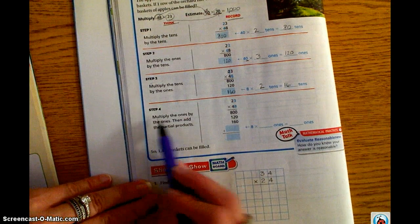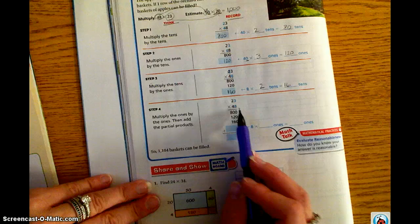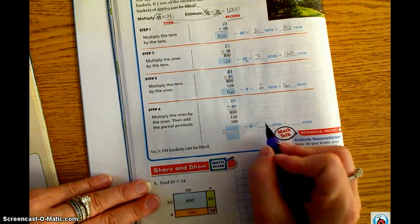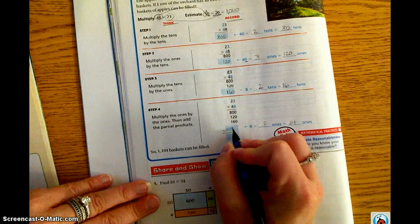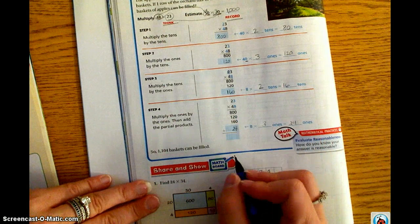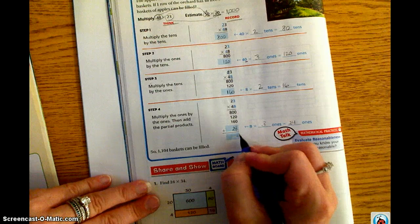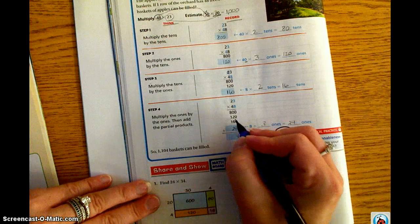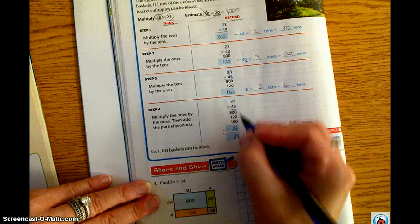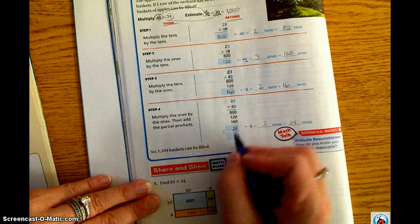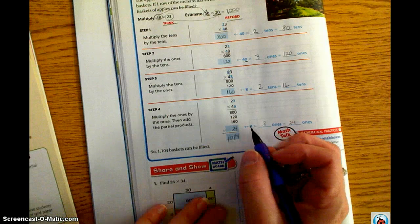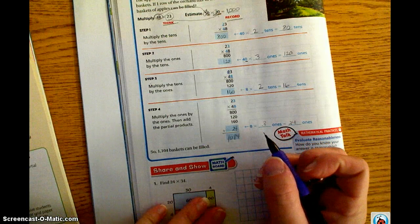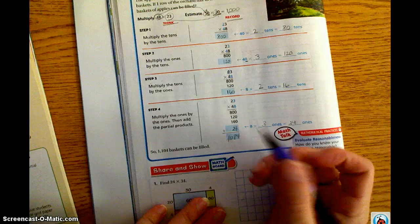And then, step 4. Multiply the ones by the ones. So, 8 times 3. So 8 times 3 ones is 24 ones. We put our 24 here. We're going to add 0 plus 4 is 4. 0 plus 2 plus 6 is 8. 8 plus 1 plus 1 is 10. So we get 1,000.